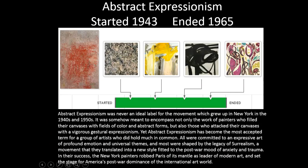Abstract Expressionism started 1943 and ended 1965. It was never an ideal label for the movement which grew up in New York in the 1940s and 50s, meant to encompass painters who filled canvases with fields of color and abstract forms, as well as those who attacked their canvases with vigorous gestural expressionism. All were committed to an expressive art of profound emotion and universal themes, most shaped by the legacy of Surrealism. In their success, the New York painters robbed Paris of its mantle as leader of modern art and set the stage for America's post-war dominance of the international art world.